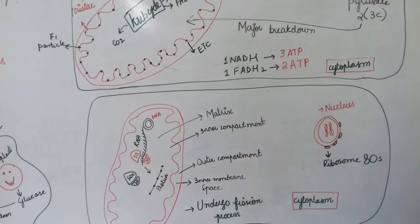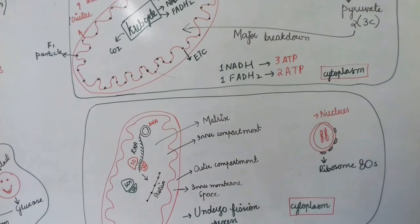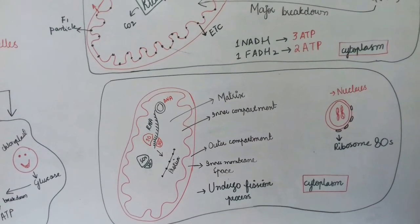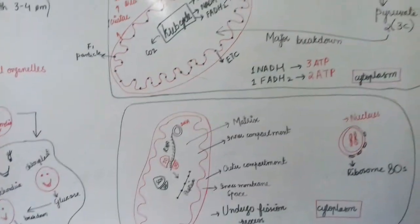Mitochondria also participates in photorespiration in plants. Fatty acid beta oxidation also occurs in the matrix. So this is all about mitochondria.